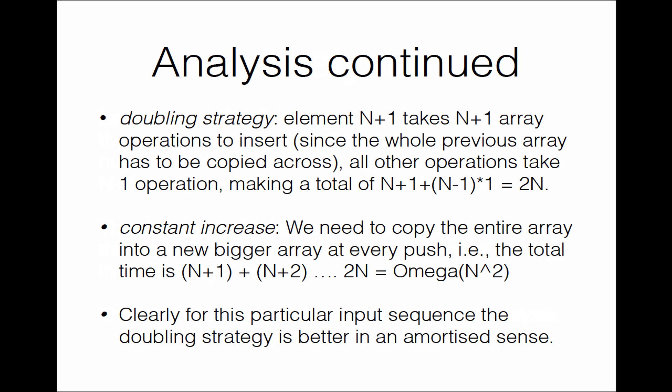So clearly, for this particular input sequence, the doubling strategy is better in an amortized sense. Over these n operations, the amount of time taken by the doubling strategy is constant — it's 2n divided by n — whereas for the constant increase strategy the time taken is on average order n per operation, since it's n² divided by n.